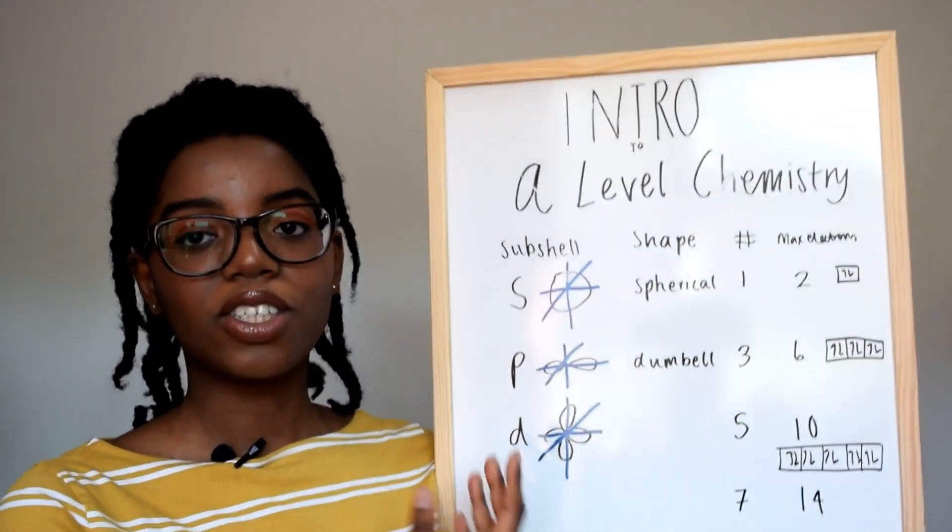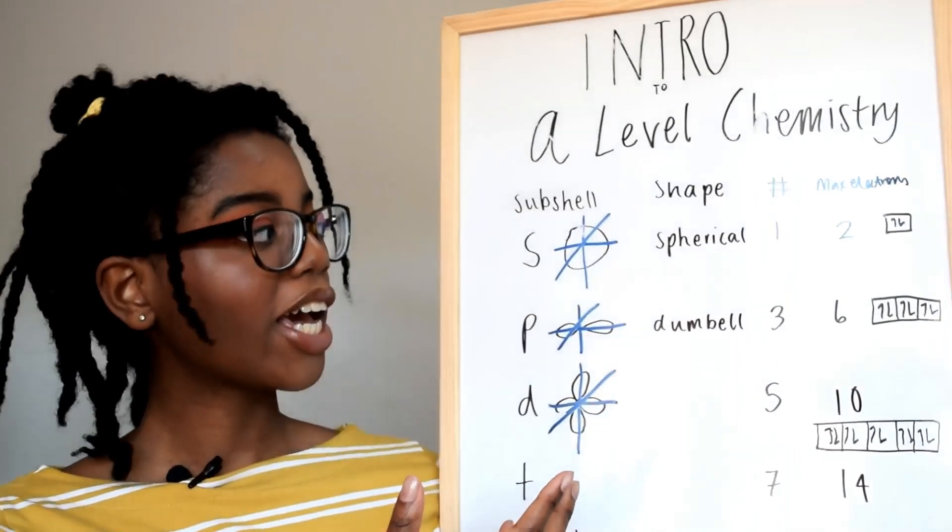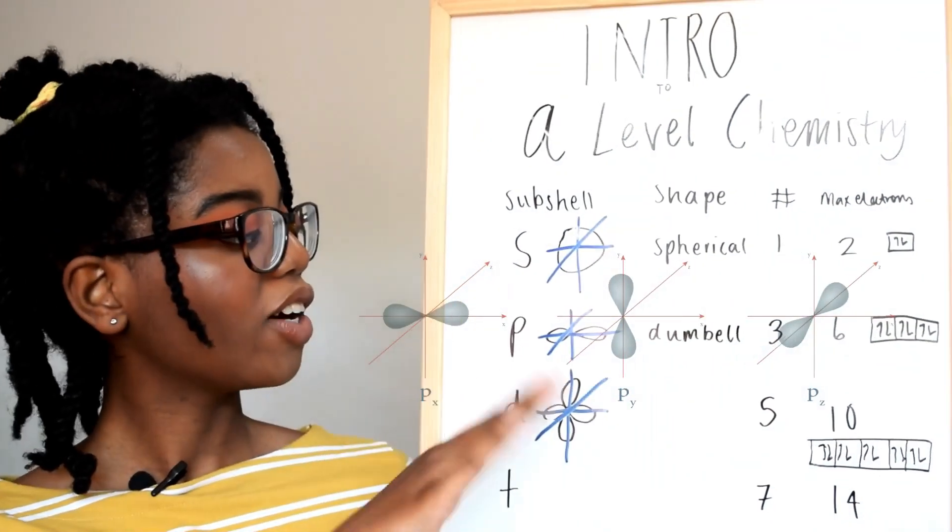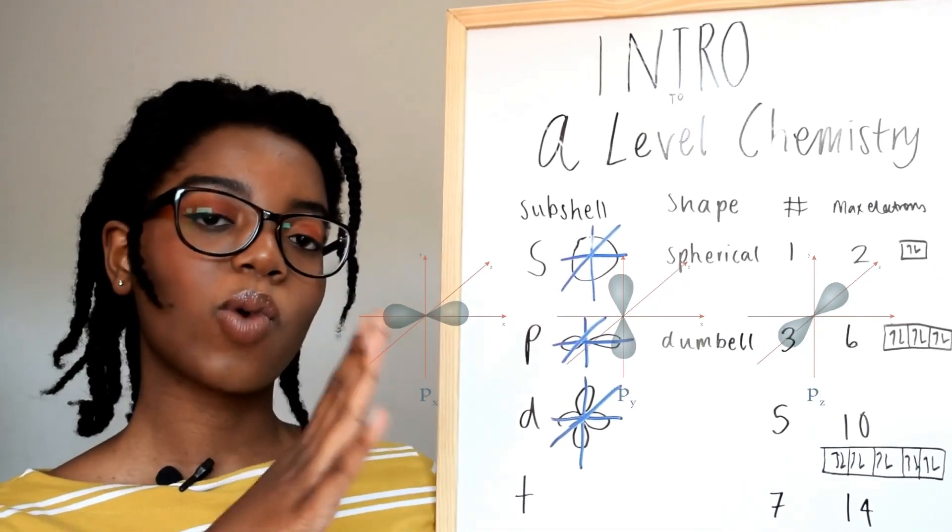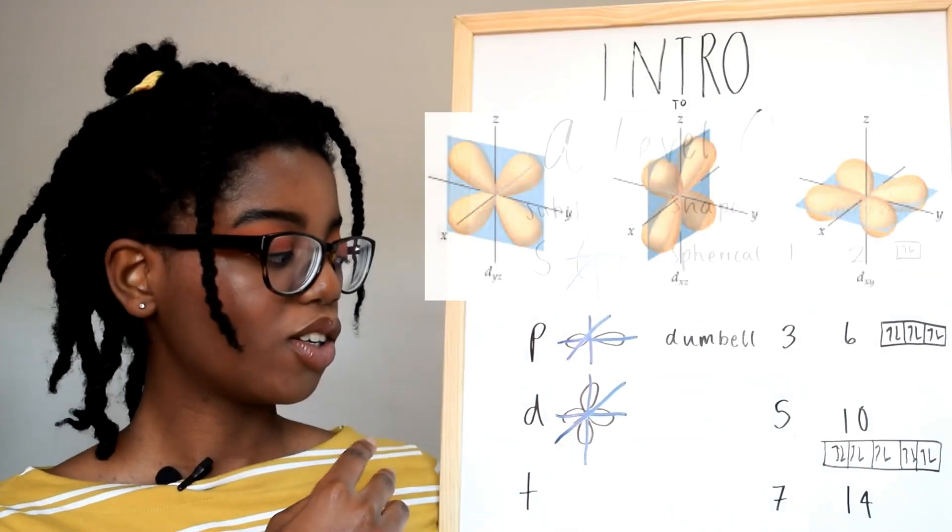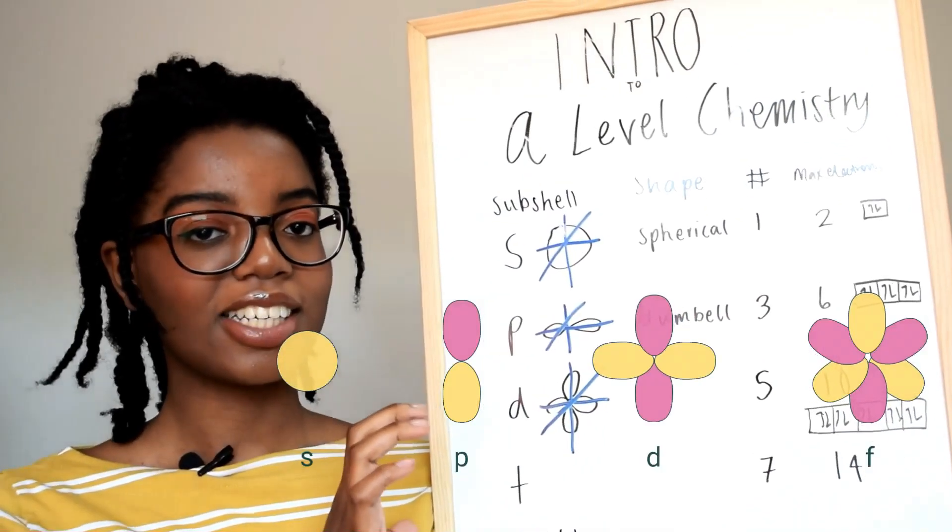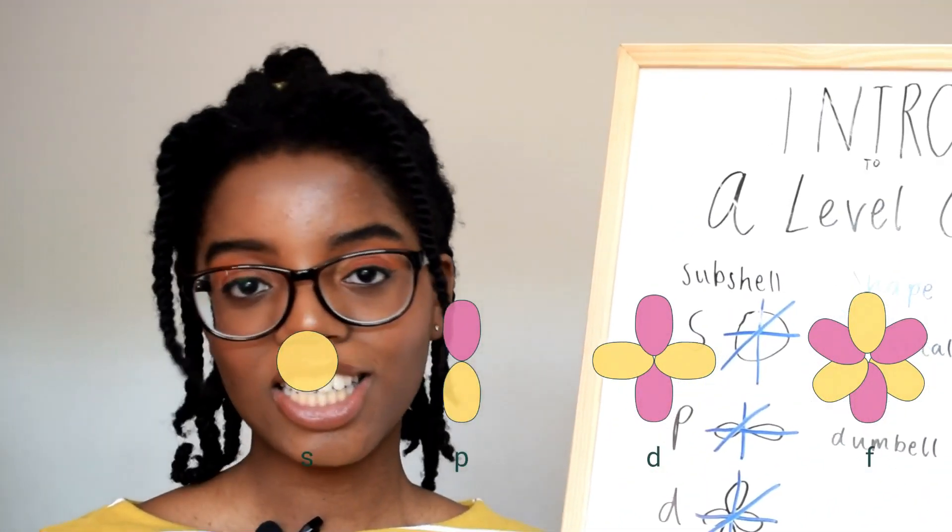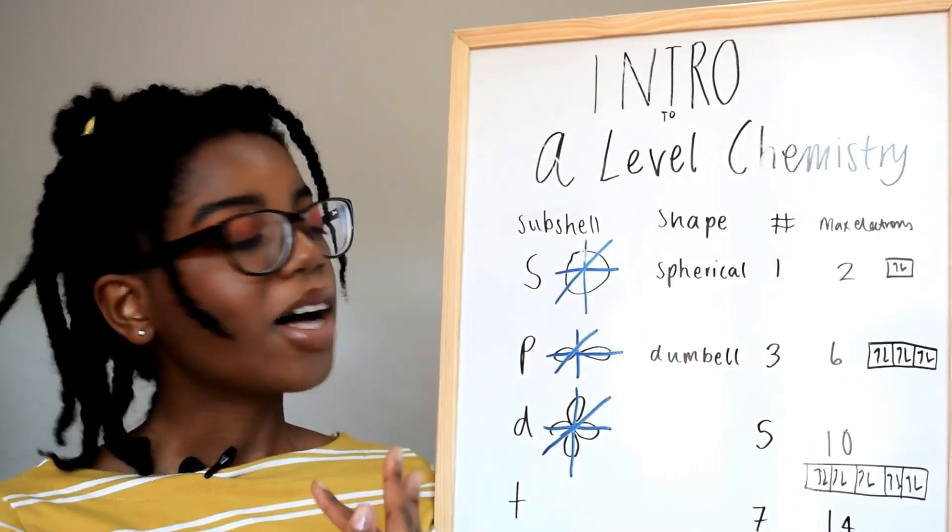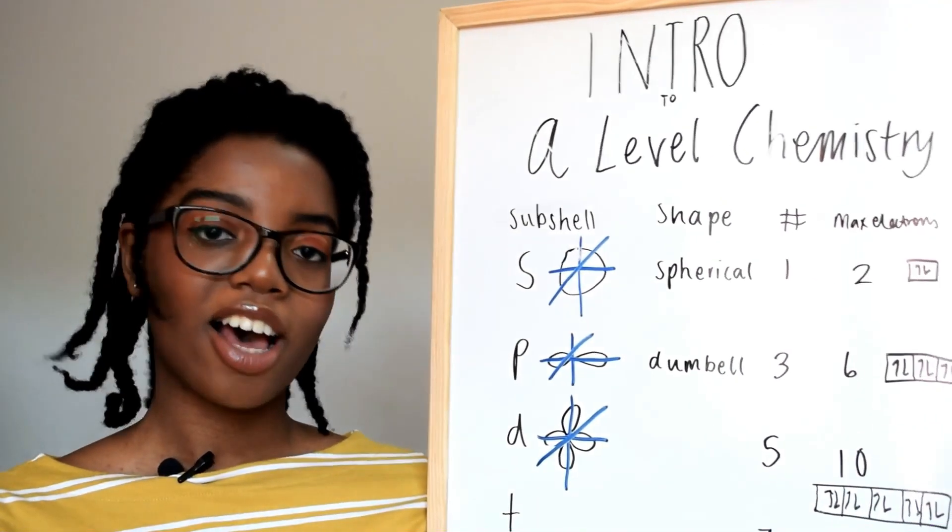With the subshells, they all have different shapes where the electrons are. With s it's just a spherical shape, a ball, and p is a dumbbell shape and it can be in any of the axis x, y, or z. With d there's actually two p orbitals, and with f it gets really complicated and you can do that in a chemistry degree if you're really interested. The number of orbitals in the subshells: s has one, p has three, d has five, and f has seven.